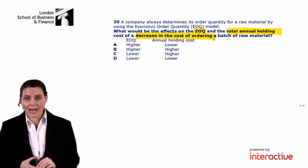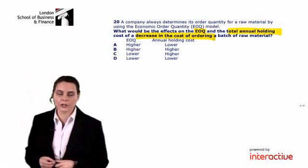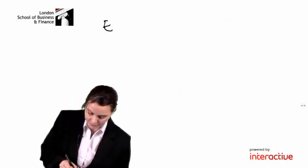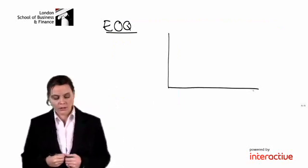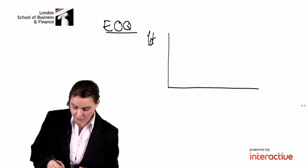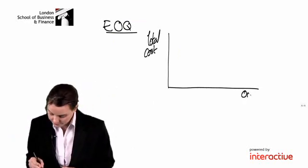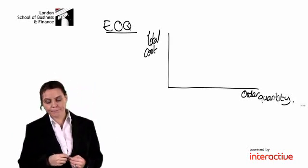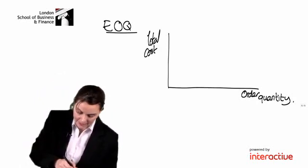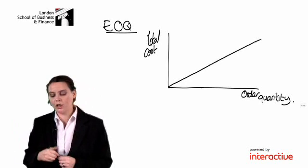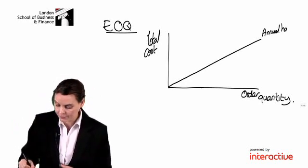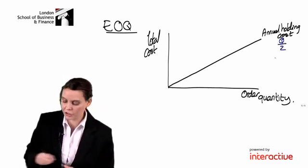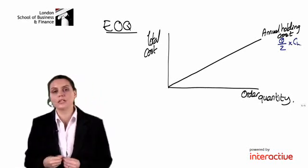To know this, we need to understand the relationship between holding costs, ordering costs, and the economic order quantity. This relationship can be shown graphically, with total cost on the y-axis and order quantity on the x-axis. Our annual holding costs go up as order quantity goes up — calculated as order quantity over 2, multiplied by the cost of holding one unit per annum.